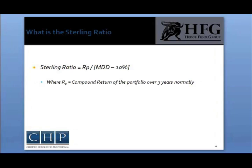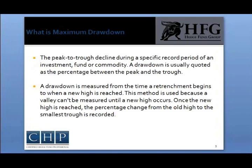The maximum drawdown of a portfolio is a key metric that can assist in evaluating a portfolio's performance. This metric points to a peak-to-trough decline during a specific period of an investment vehicle. A drawdown is usually quoted as a percentage between the peak and the trough.